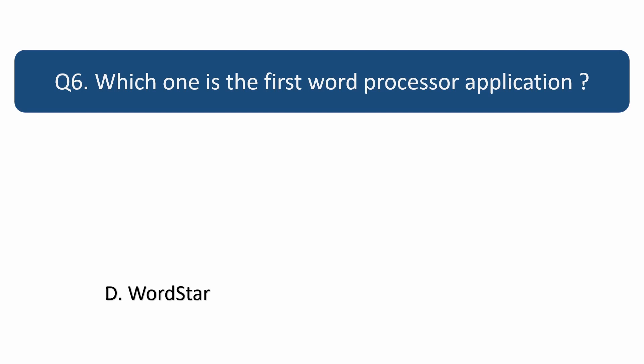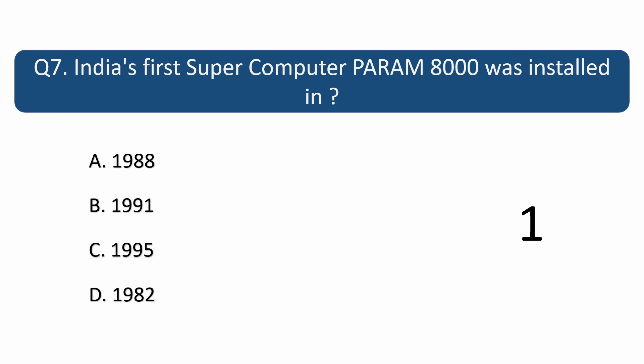Question number 7. India's first supercomputer Param 8000 was installed in? Answer is B. 1991.